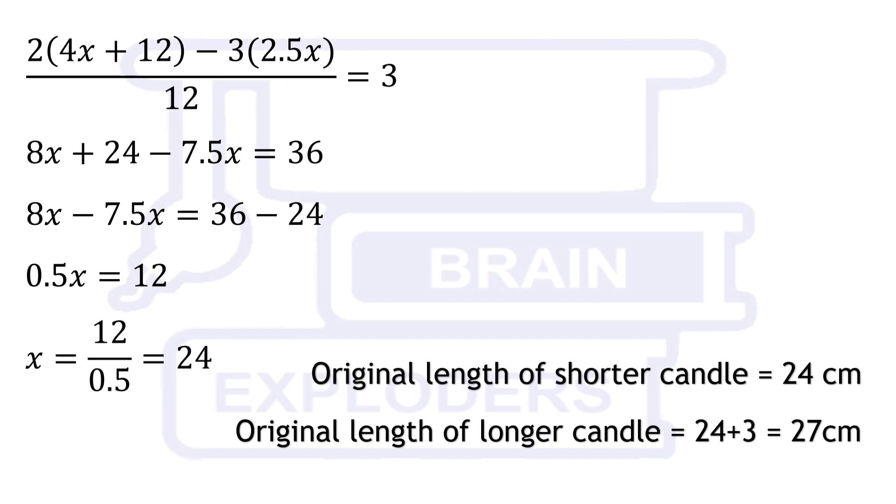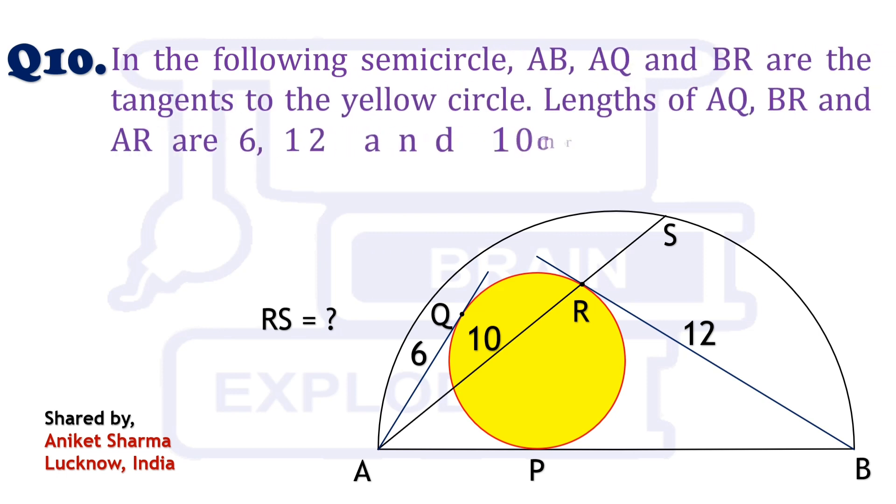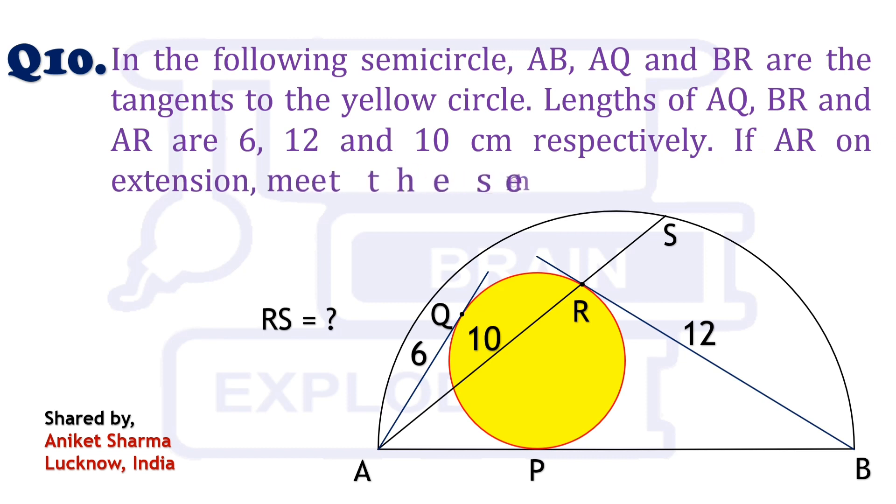Let us move to our another question. In the following semicircle, AB, AQ and BR are the tangents to the yellow circle. Lengths of AQ, BR and AR are 6, 12 and 10 cm respectively. If AR on extension meet the semicircle at a point S, then find the length of RS.